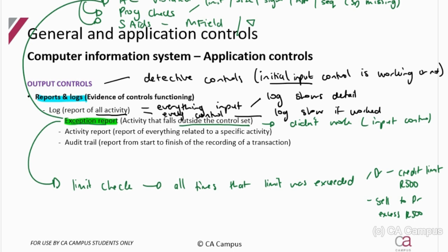Often when dealing with application controls and you're asked to find program controls within a client system, you would find and discuss the input controls, but then you need to discuss output controls to show where that input control didn't work and where it did. Where it did work, you can get a log that shows what happened and confirms the control is working. Where you want to specifically identify controls that aren't working, you will get your exception reports.